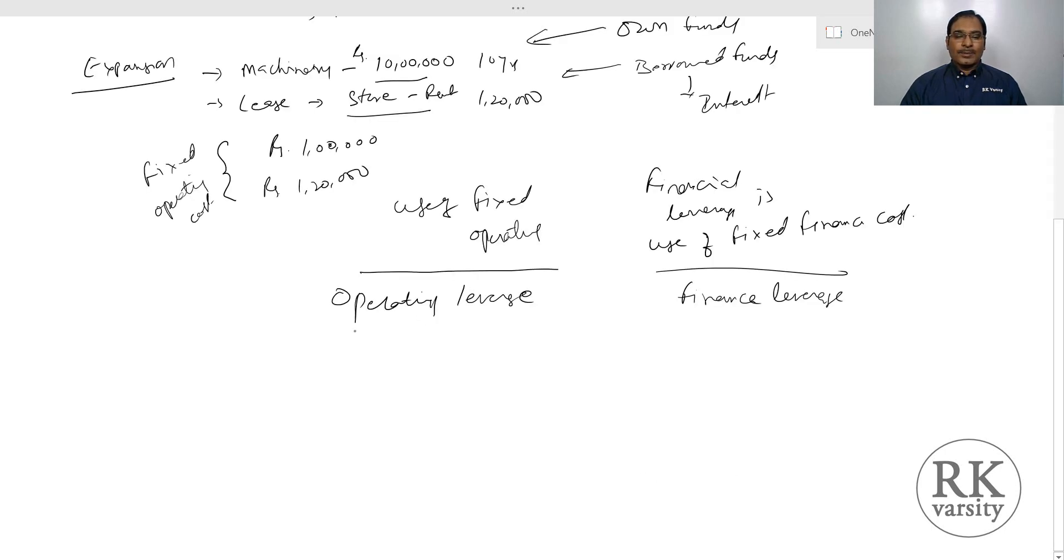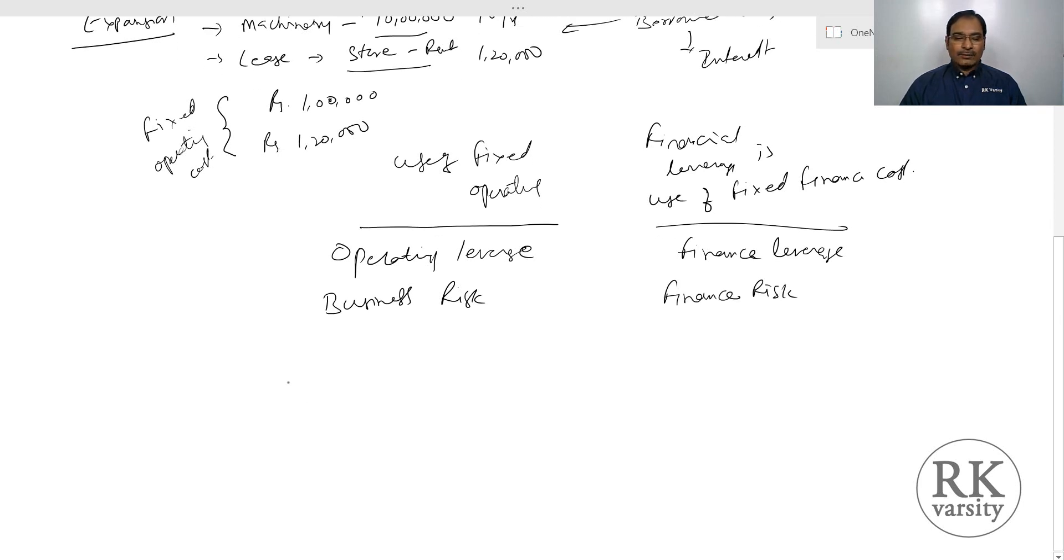Operating leverage is also called a part or proportion of business risk, whereas the financial leverage is called finance risk and the product of operating leverage and financial leverage, that is operating leverage times financial leverage, is called combined leverage. So combined leverage is a measure of total risk.